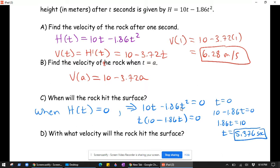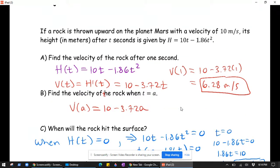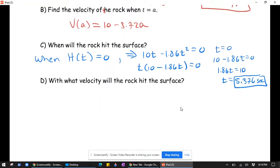I'm ignoring the time equals 0 because that's clearly not when it hits the surface. That's when it's originally thrown upward. With what velocity will the rock hit the surface? Now we just need to evaluate our velocity function at the time when it hits the surface. And so we get 10 minus 3.72 times 5.376.